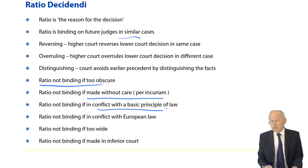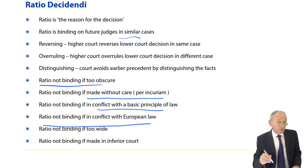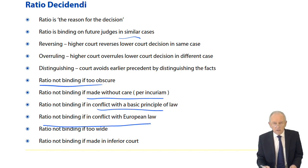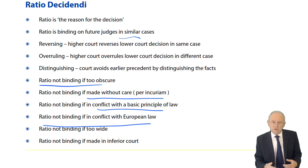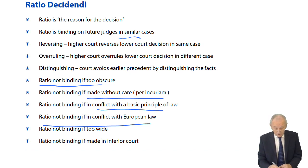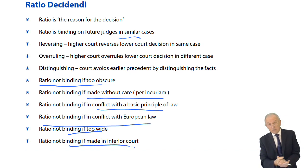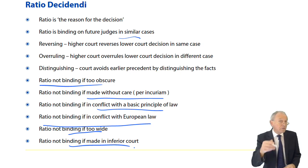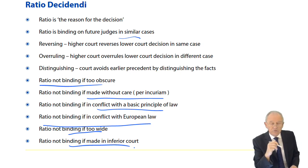As a result of Brexit, a ratio is also not binding if it's in conflict with European law — though I'm wondering how much longer that will apply, and whether an independent UK is going to continue to be cognizant of and follow European law. That has to be resolved. A ratio is also not binding if it's too wide, or if it's made in an inferior court. A High Court decision is binding on later High Court judges but not on the Court of Appeal, and not on the Supreme Court judges. Court of Appeal decisions are not binding on the Supreme Court.